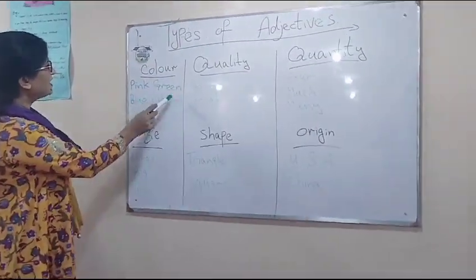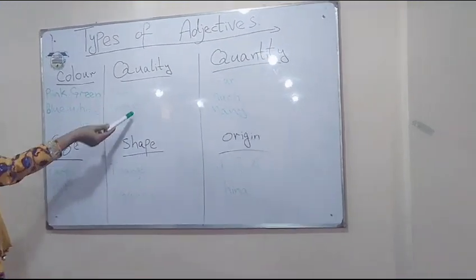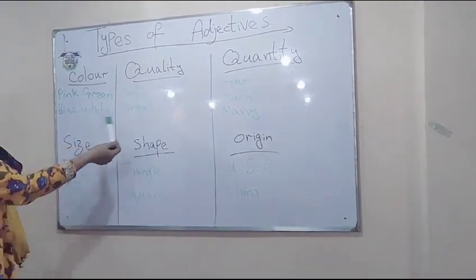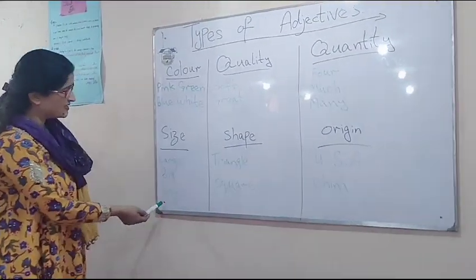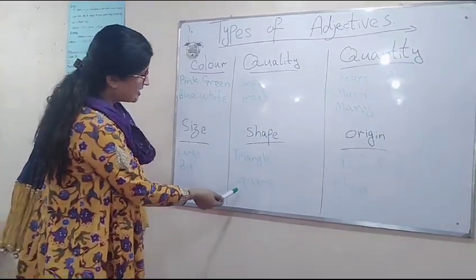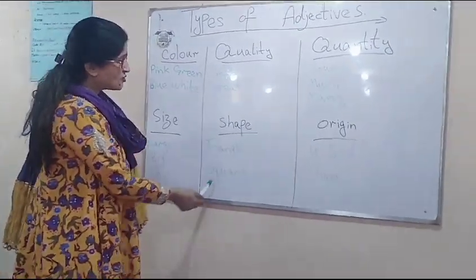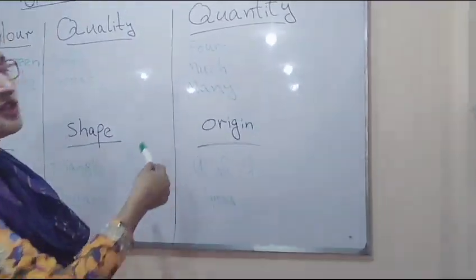For colors: green, blue, white. For quality: soft, red. For size: large, big, tiny. For shapes: triangle, square. For quantity: four, much. And better.